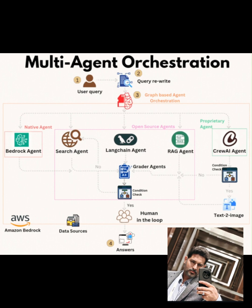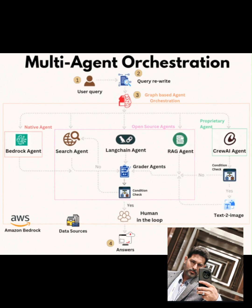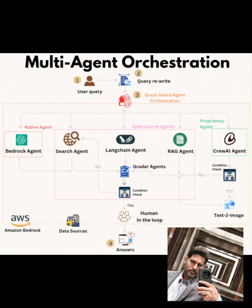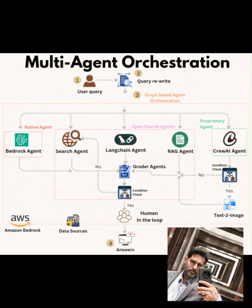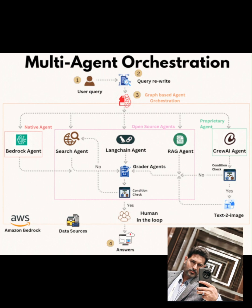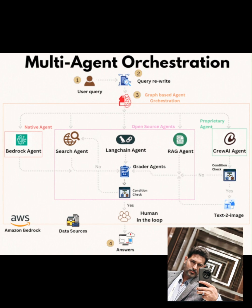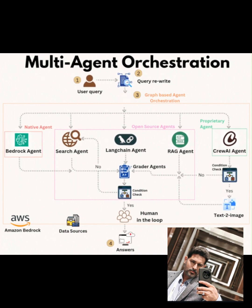Then we have the Langchain agent, built on the Langchain framework, which excels at chaining tasks. Langchain uses a memory-augmented LLM, like Llama or Claude, to maintain context across steps. It might combine the search results with data from other sources using Langchain's built-in tools like document loaders or text splitters to process the information.